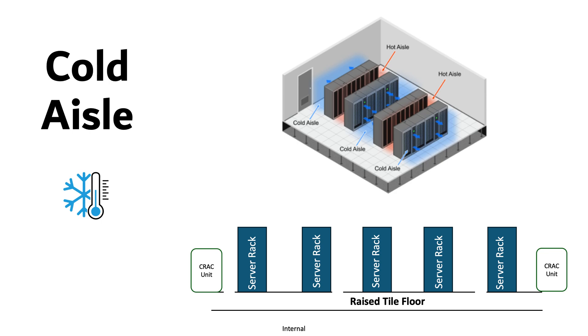If you look from the side view below, here this is the aisle where the front of these servers face each other. Cold air from the air conditioning system is supplied to this aisle, allowing it to be pulled into the front of the servers to cool them down. The cold air is isolated to prevent it from mixing with the hot exhaust air.